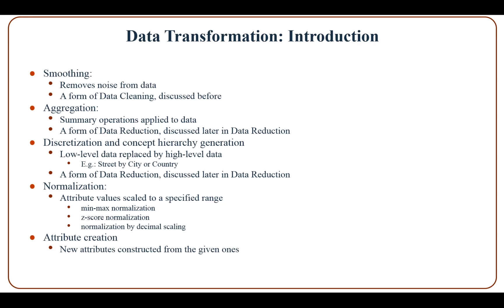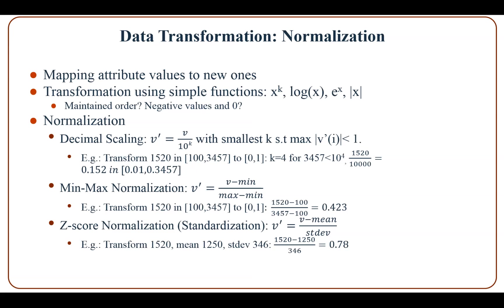In normalization, attribute values are scaled into a small range of values. We discuss three methods: min-max normalization, z-score normalization (also called standardization), and normalization by decimal scaling. In attribute creation, new attributes are constructed from the given ones. With normalization, attribute values are mapped into a specified small range or interval of values.